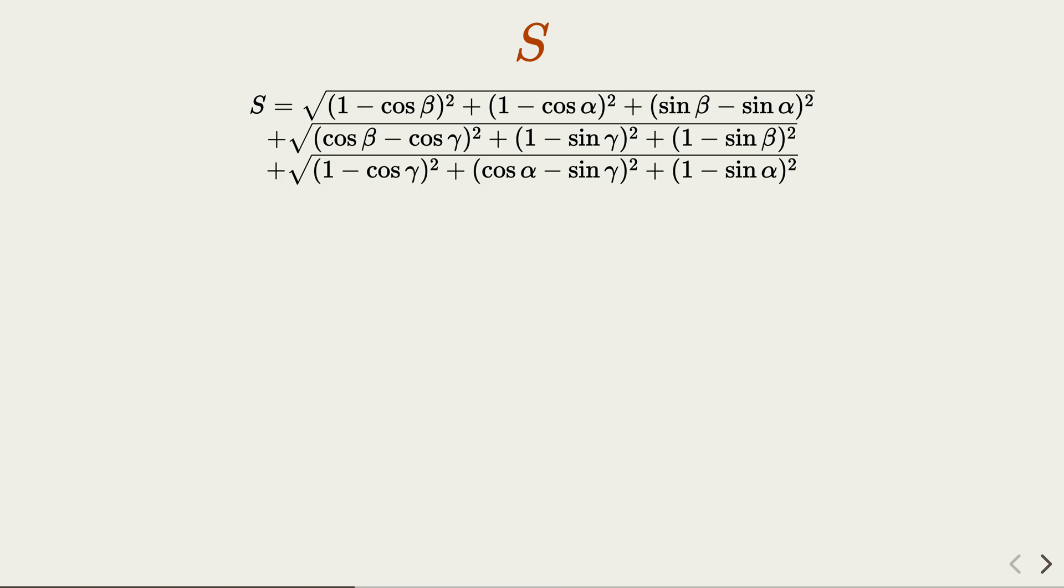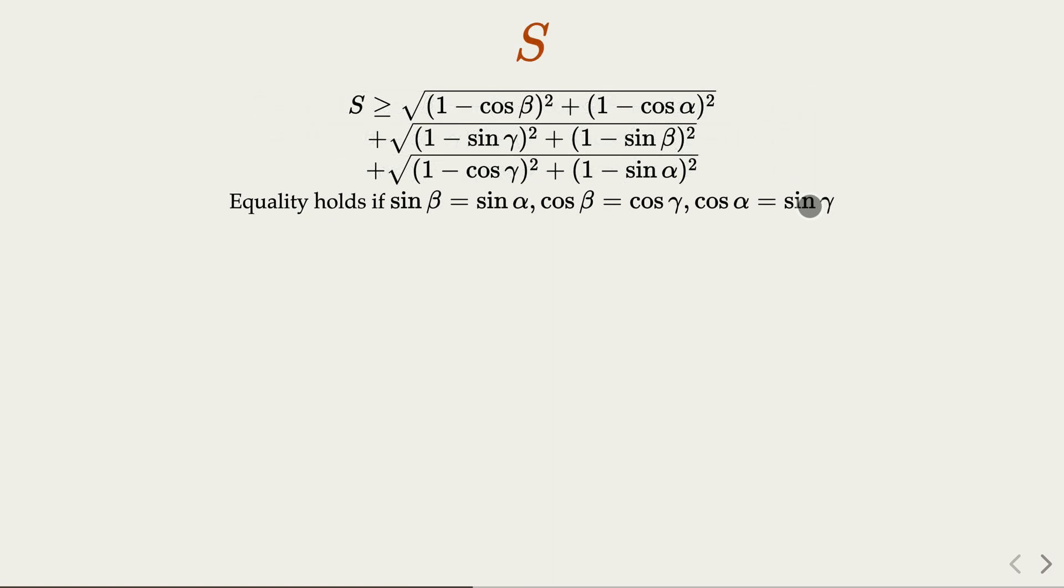Let's look at the min of S. In order to minimize this, we would wish the term like sine beta, sine alpha to go away. Because alpha and beta are the three variables, we can have a choice such that sine alpha equals sine beta. So using this argument, we claim that S is going to be greater or equal to those terms goes away. And the equality here happens when we have this constraint.